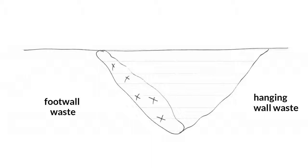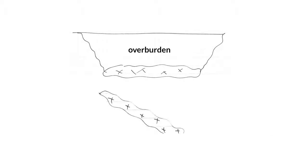If, during the mining operation, some of the foot wall is also removed, then the waste produced is called foot wall waste. If the deposit is flat or is dipping and not outcropping to the surface, but is located at a certain shallow depth from it, then the overburden becomes waste rock in the surface mining process.